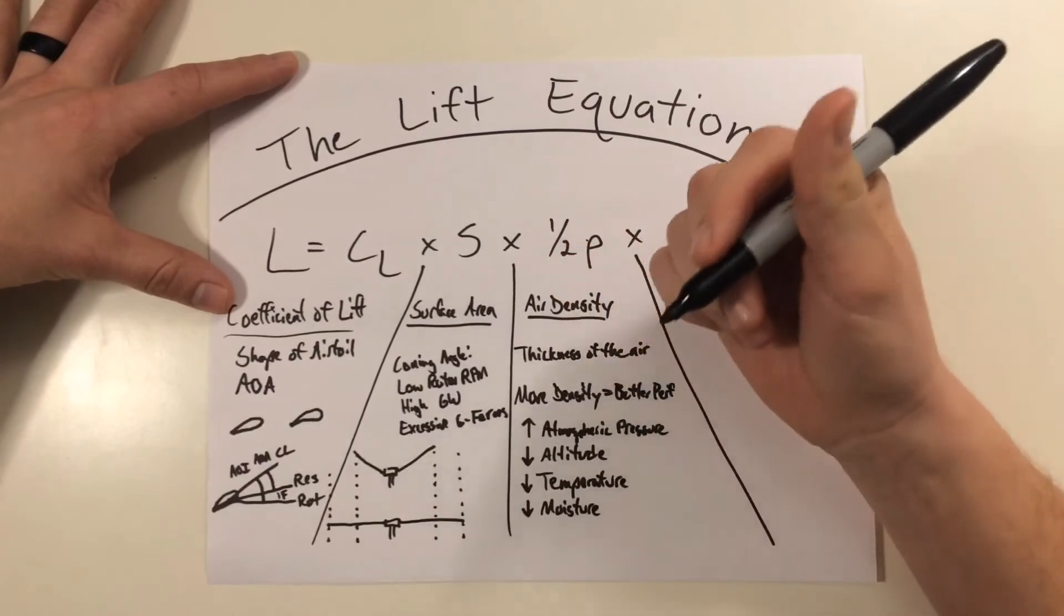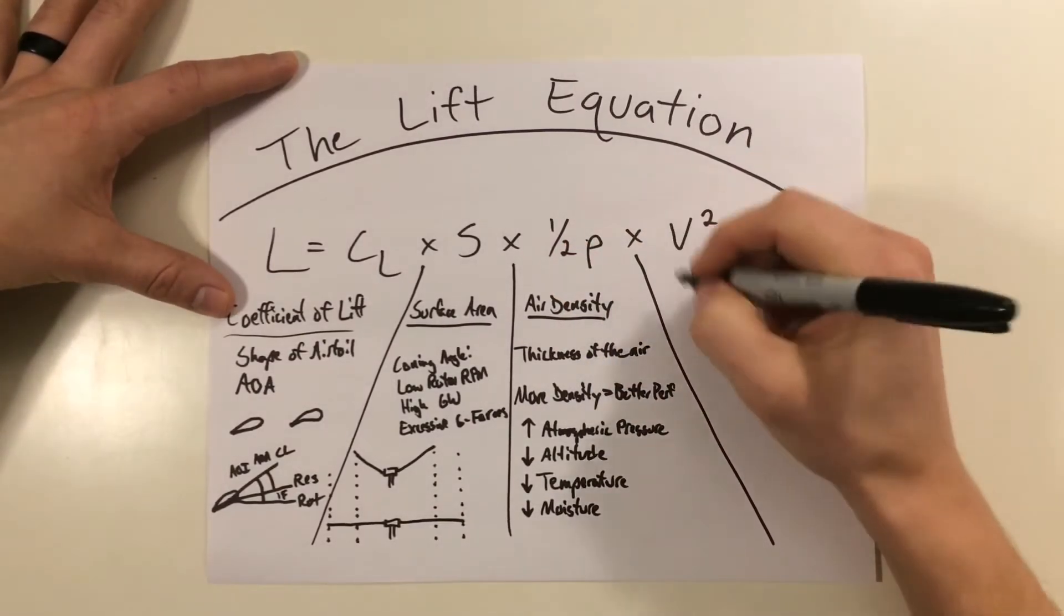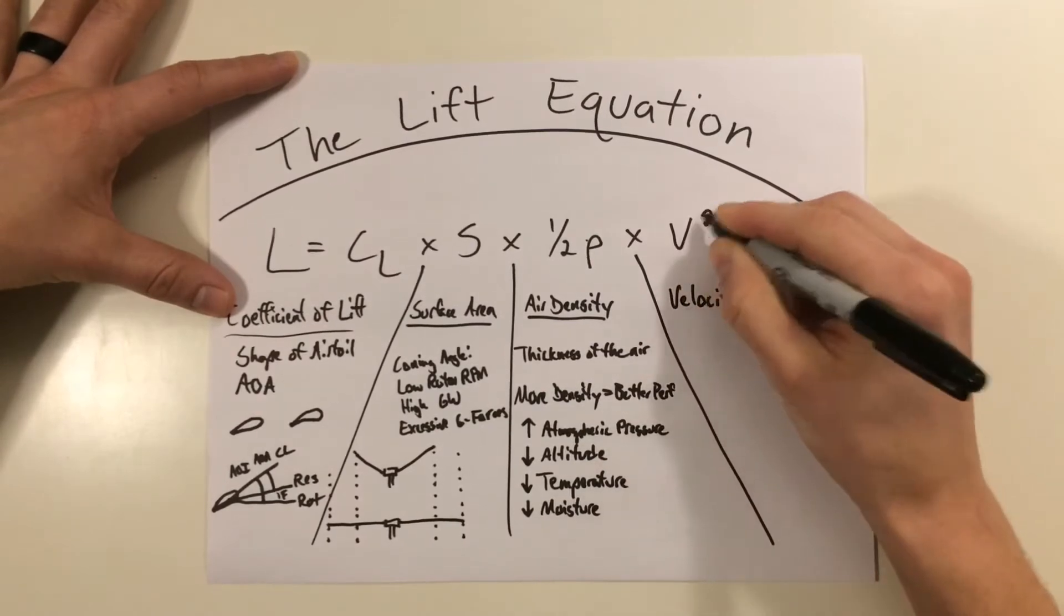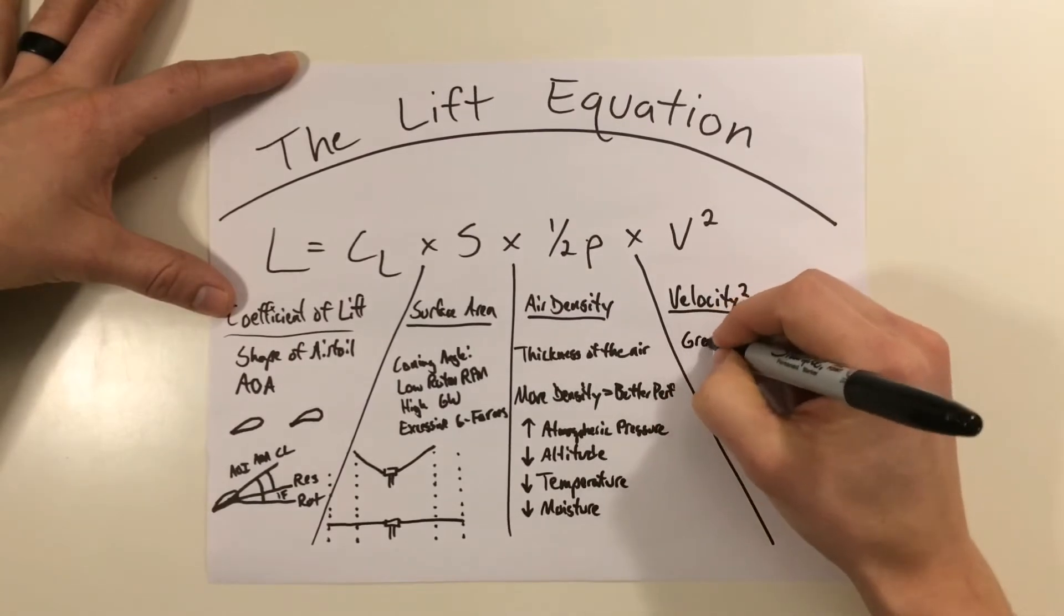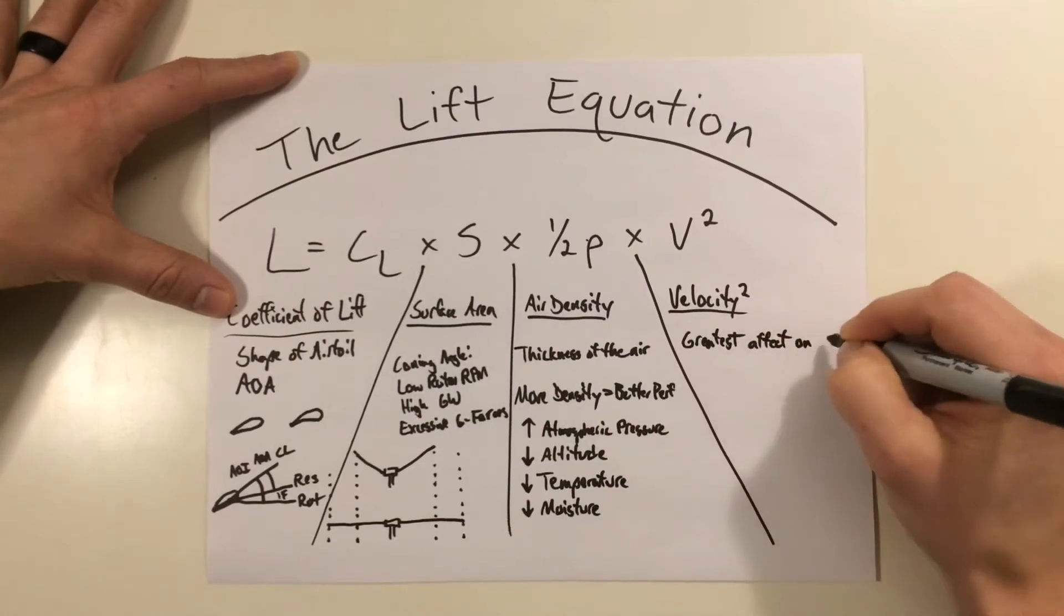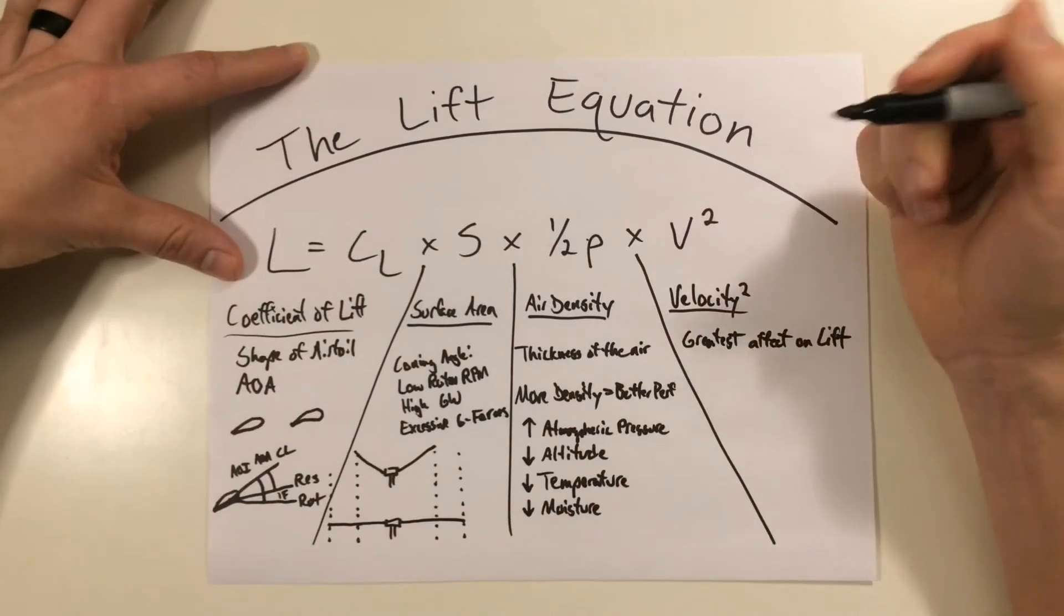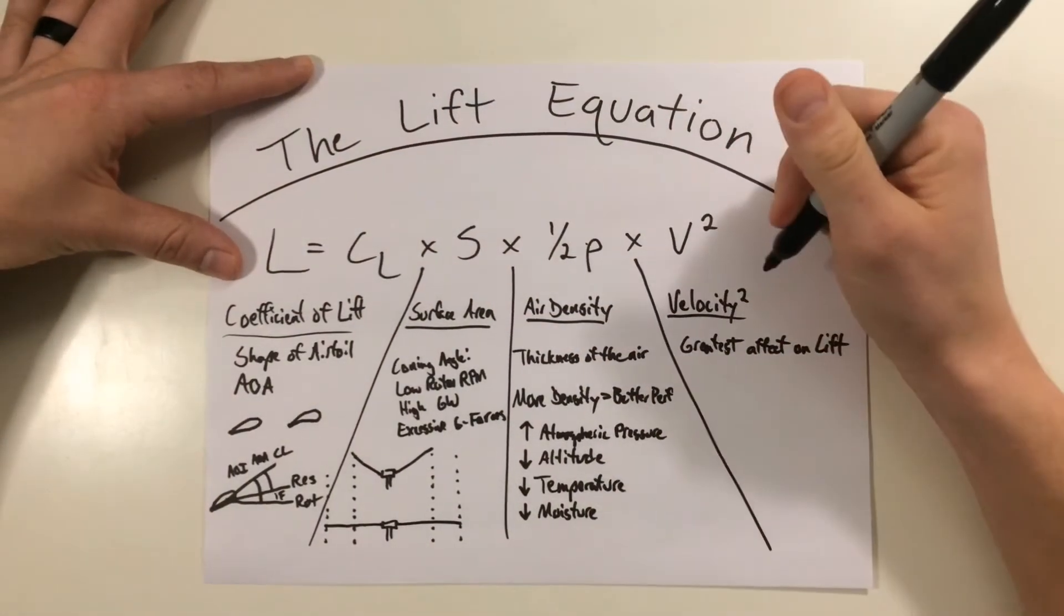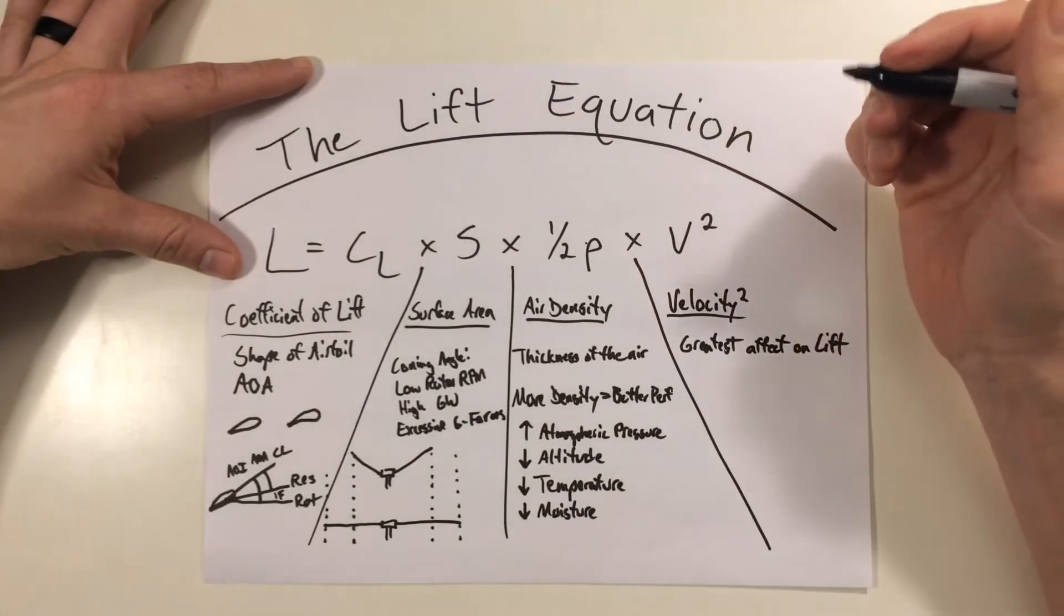The last and arguably the most important part of the lift equation is going to be velocity. Keep in mind, this is going to be velocity squared. And this is going to have your greatest effect on lift. Now, why is that? Well, obviously looking at something in the equation that's different, this thing is velocity squared. So this means that this has an exponential factor in the equation.